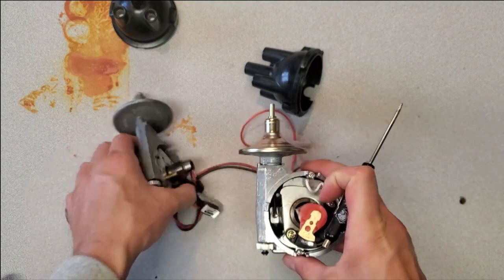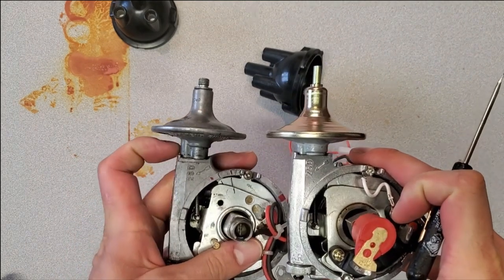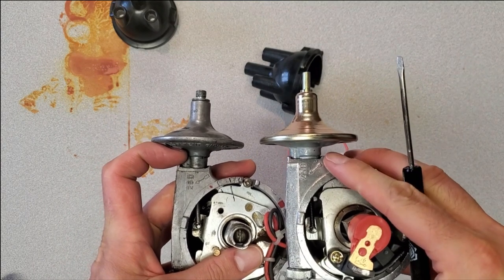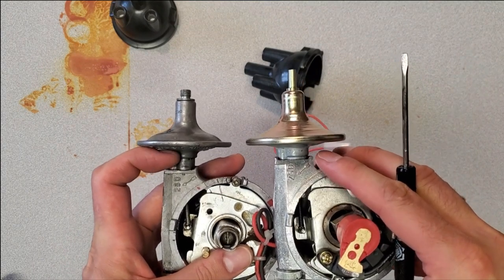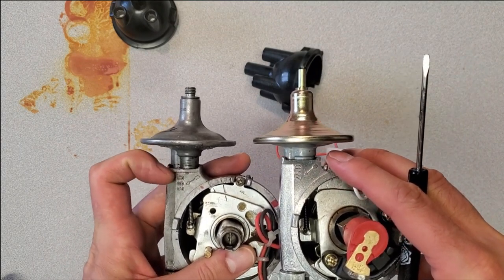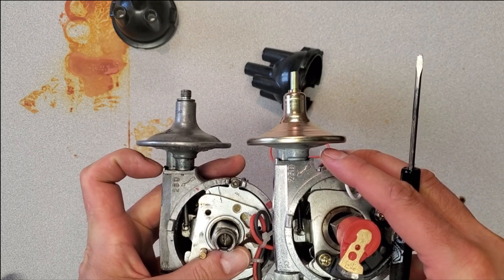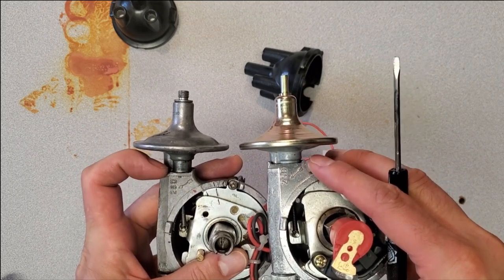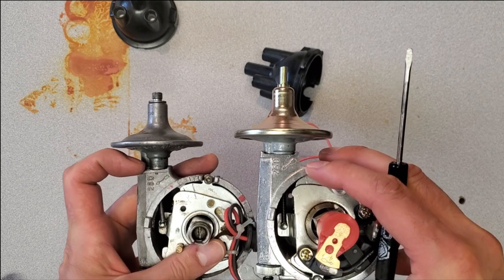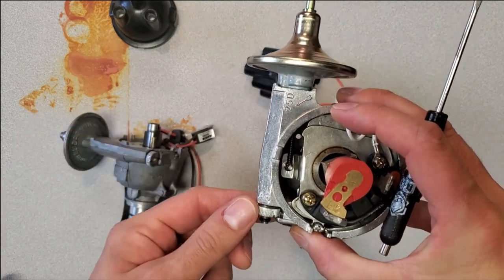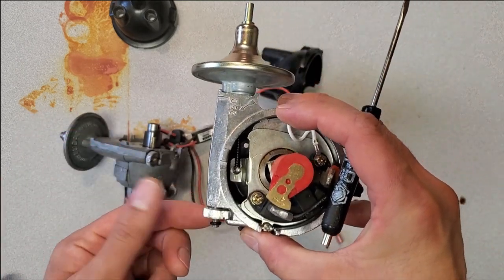I'll see if I can compare it to this one here—you can see how much larger that piece is than on this. This one can move further down until it rests against the body, whereas this one does not have that much range of motion, which means when you're adjusting this unit, it simply stops against the vacuum module.